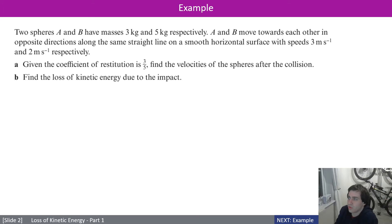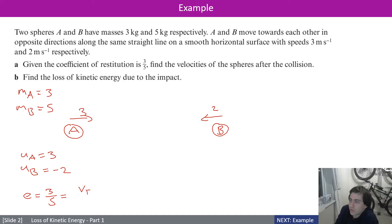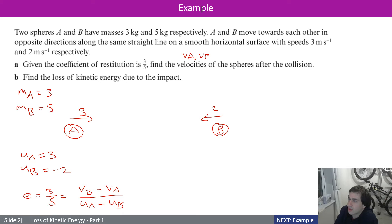Let's look at our first example. We have two spheres A and B. Their masses are: mA = 3, mB = 5. They move towards each other in opposite directions along the same straight line on a smooth horizontal surface, with speeds three and two respectively. So uA = 3, uB = −2. The coefficient of restitution is e = 3/5, which equals (vB − vA) / (uA − uB). Find the velocities — that is, find vA and vB after the collision.